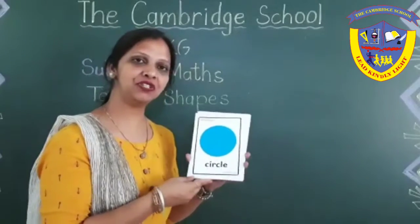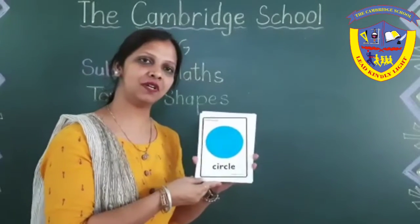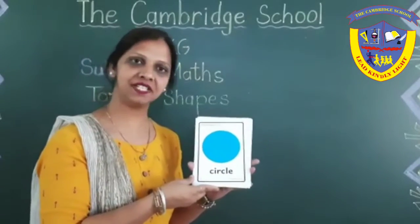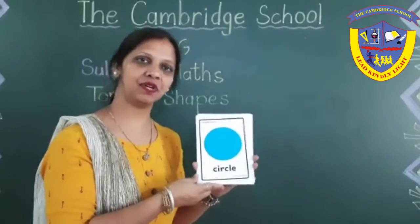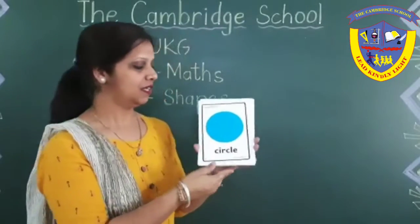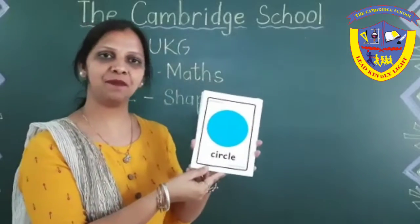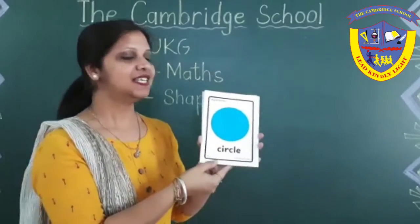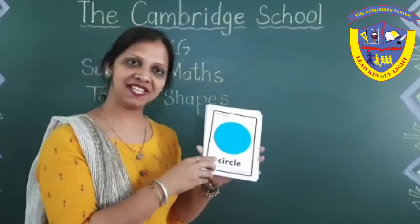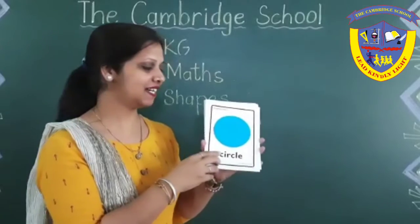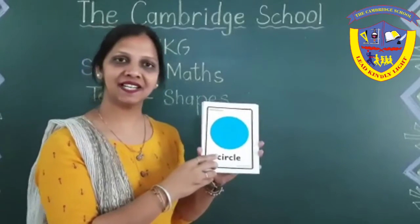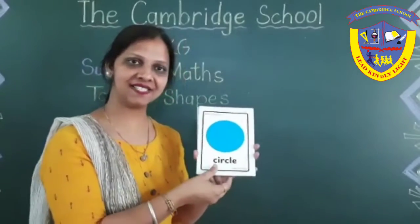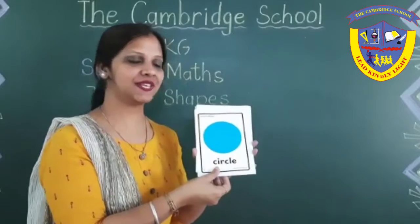Now students, I will show you one by one all shapes and you will identify. First shape is circle. Which shape is this? Circle. Circle has no corners.